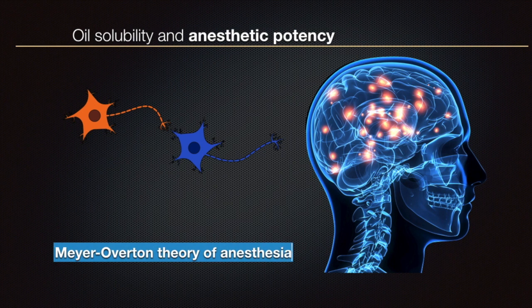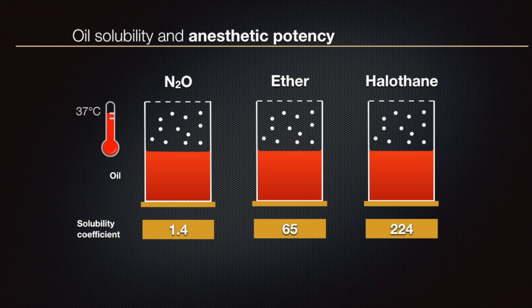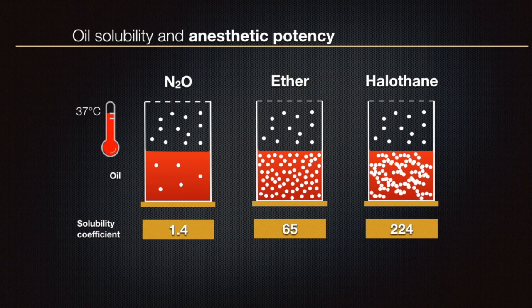The figure illustrates the relative solubilities of nitrous oxide, ether, and halothane in oil. The greater the solubility, the greater the number of dots representing the molecules of anesthetic agent in the oil. Note that the order of agents has changed: although nitrous oxide is still the least soluble, the agent with the greatest solubility in oil is now halothane, with ether placed in the midway.